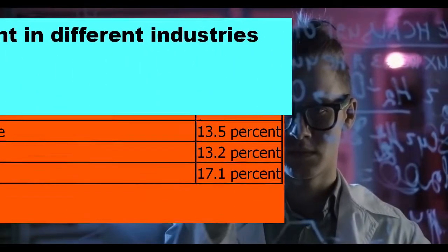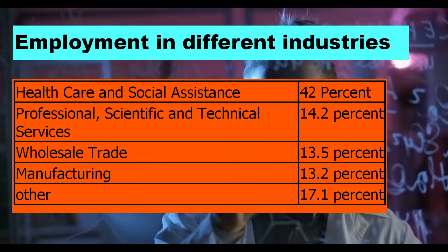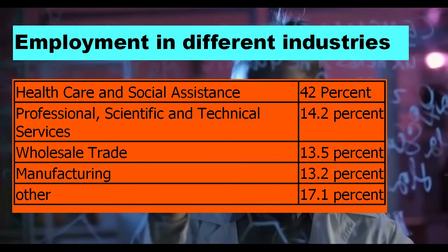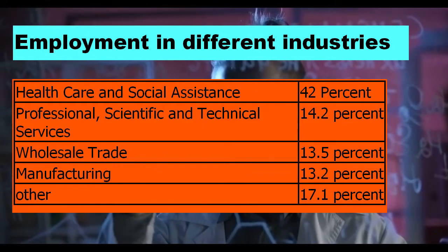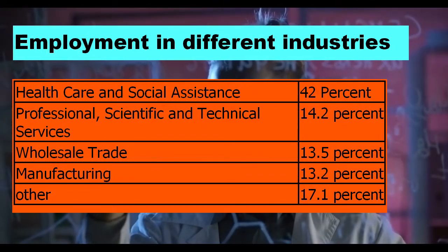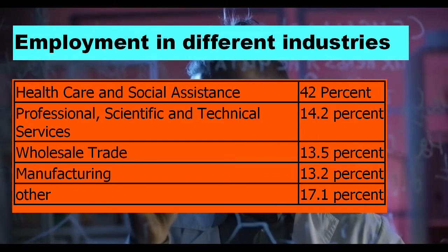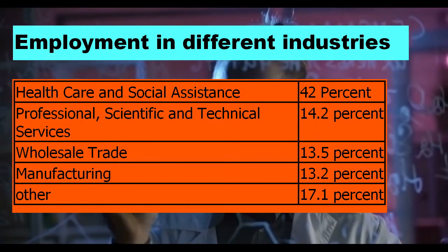The percentage of Biomedical Engineers in healthcare and social assistance is 42%, in professional, scientific and technical services it is 14.2%, in wholesale trade it is 13.5%, in manufacturing it is 13.2%, and the rest are employed in other industries which is 17.1% of Biomedical Engineers.